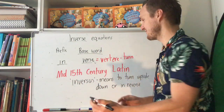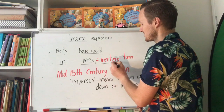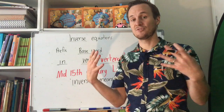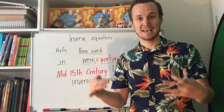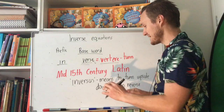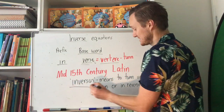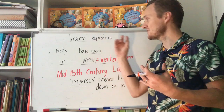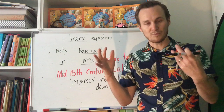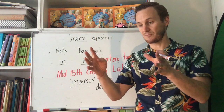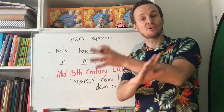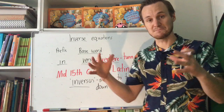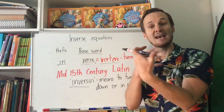So I went to my online etymology dictionary and found that the word 'verse' comes from the Latin 'vertari,' meaning 'turn.' But the actual word 'inverse' comes from mid-15th century Latin — 'inversus' — which meant 'to turn upside down or in reverse.' So when we're talking about inverse equations, we're talking about turning a number problem around to solve it. The inverse means to turn around, so we're going to turn our problems around today.